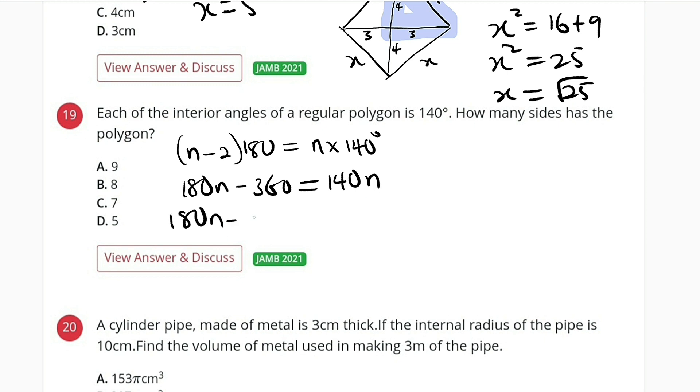We have 180n minus 140n. If you take 360 to the right it becomes positive 360. So we have 180 minus 140 is 40. So we have 40n equal to 360.